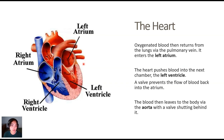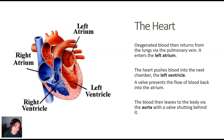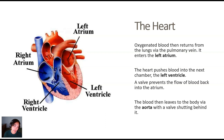Oxygenated blood returns from the lungs via the pulmonary veins — it's coming in from behind, so it's a bit hard to see. It enters into our left atrium and then pushes into the left ventricle. There's also a valve here stopping it from going back. Then it leaves through what we call the aorta, and again there's another valve there that stops the blood from pushing back.